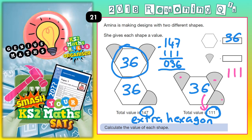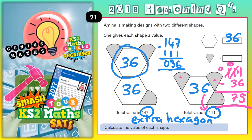So 111 take off 36 — let's see where that takes us. 1 take away 6, you can't do so borrow from the 1. That becomes 0, and the 1 we borrow makes 11. 11 take 6 is 5. 0 take 3, we can't do so borrow. That 1 becomes 0, and the 1 we just borrowed makes that 0 into 10. 10 take away 3 is 7. So the three pizza slices put together must be worth 75.